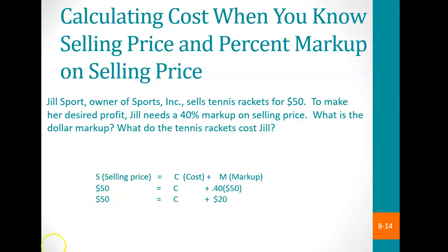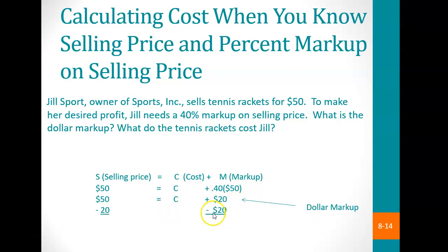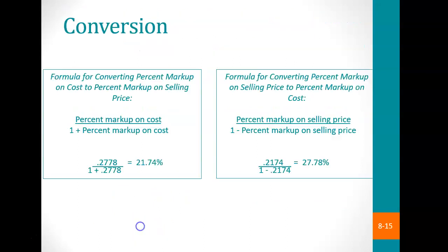The selling price equals cost plus 40% of $50, which is $20. So the markup is $20. We're solving for the cost, which equals $30. If you know any two of these three values, you can solve for the unknown variable.